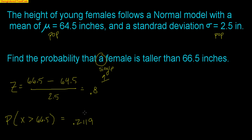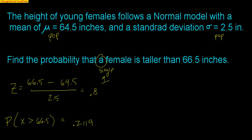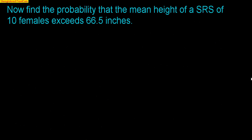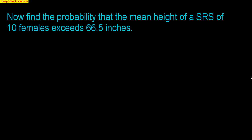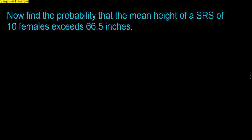So there's about a 21% chance that a female is 66.5 inches or taller. A single female could vary a lot — there are lots of tall girls and lots of short girls in this world.